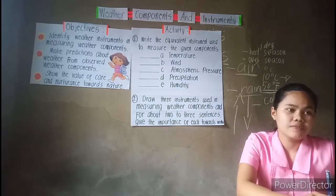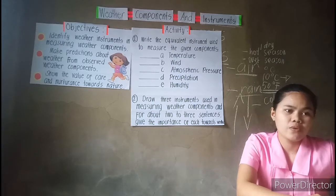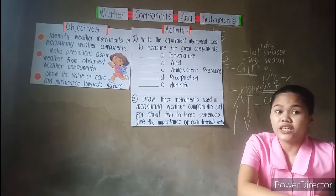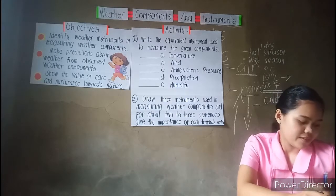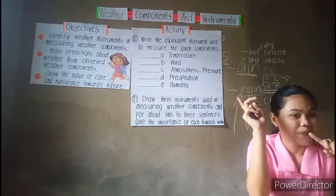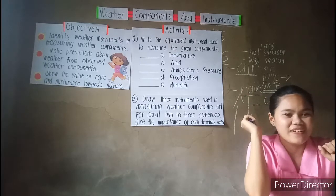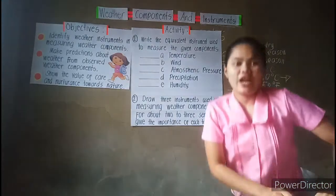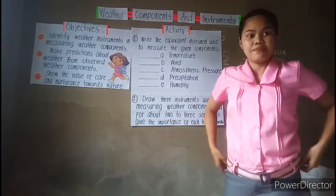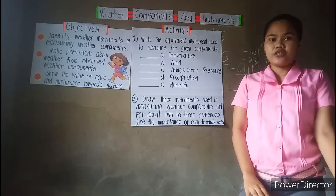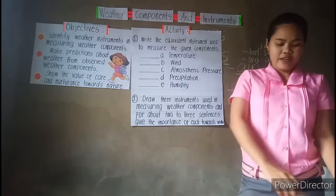Two minutes remaining. What number are you on now? Okay. Five, four, three, two, one. Raise your pen and your paper because we will have the checking. Let's do it in clockwise class.